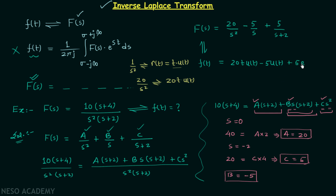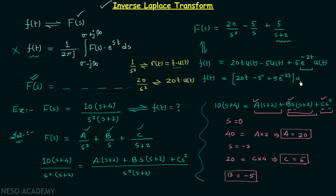For 5/(s + 2), according to the frequency shifting property, having (s + 2) instead of s means we multiply by e^(−2t), giving 5e^(−2t)u(t). We have already done this many times in previous lectures. So f(t) = (20t − 5 + 5e^(−2t))u(t). This is our answer. I hope you now understand how to deal with inverse Laplace transform — don't forget to brush up your concepts of partial fractions. See you in the next lecture.